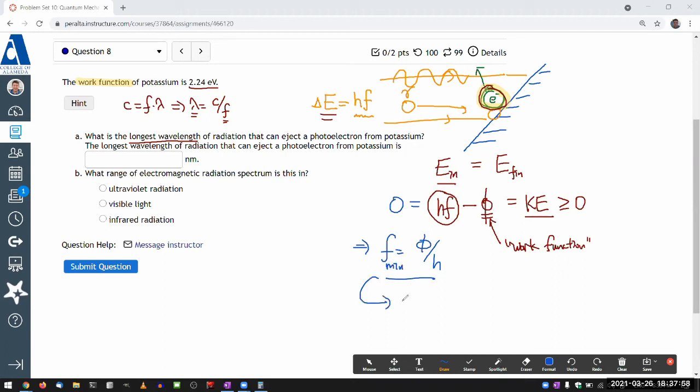And from that, you can get the maximum wavelength that is still short enough to eject the photoelectron. That would be, let me look at the, c divided by f_min, or plugging in this, it's Planck's constant times the speed of light, divided by work function.